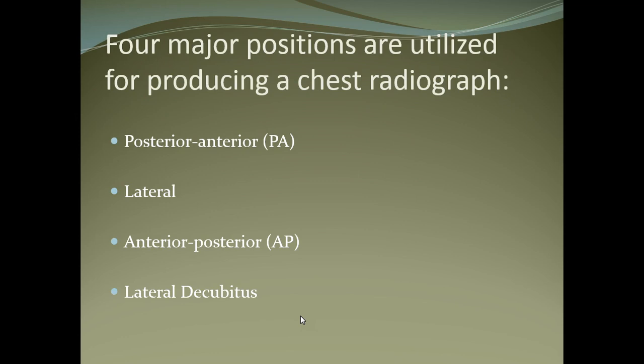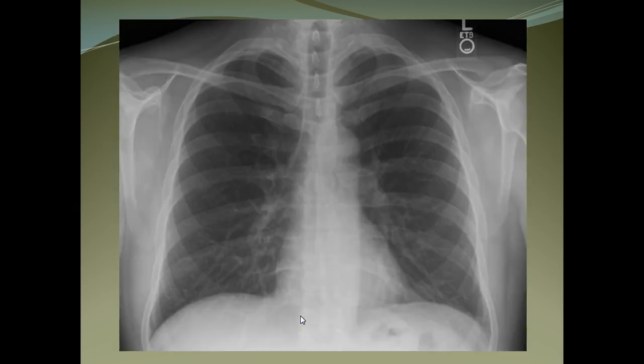The AP (anterior-posterior) film is done in neonates, infants, and ICU patients who cannot stand. The lateral decubitus film is usually done for pleural effusion, pyopneumothorax, or hydropneumothorax — when the effusion is so small it cannot be seen on PA or lateral view. The patient lies down on the affected side for about five to six minutes before the X-ray is taken.